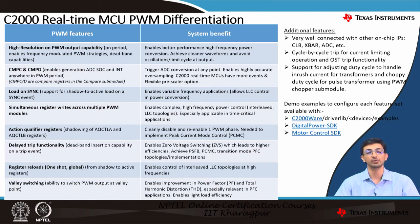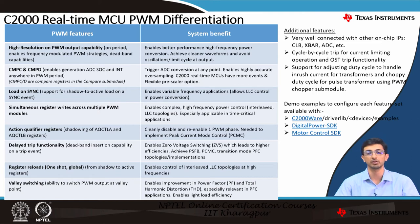Register reloads are also possible — one-shot register reload for a single PWM module, or at a global level across all PWM modules. This enables control of interleaved LLC topologies at high frequencies. The valley switching feature has the ability to switch the PWM output exactly at the valley point or as late as desired by the user, improving power factor and total harmonic distortion — especially relevant in power factor corrector applications at light load efficiency conditions. Beyond these, additional features include cycle-by-cycle trip for current limiting and one-shot trip for fault detection. PWM is also well connected with on-chip IPs such as the CLB, crossbars, and ADC.